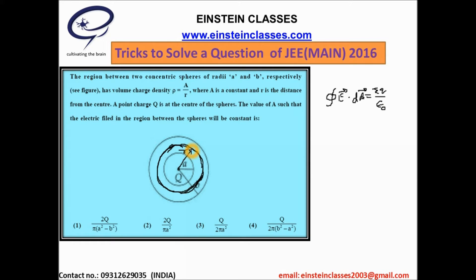To find the electric field at this point which is at distance r from the center of the concentric sphere we have to take this Gaussian surface, and within this Gaussian surface we have to calculate the total charge. As we know, the total charge will be Q plus this charge enclosed by the Gaussian surface.